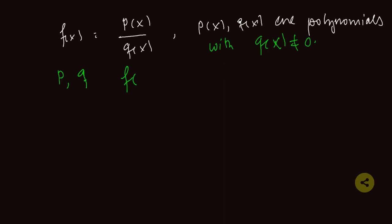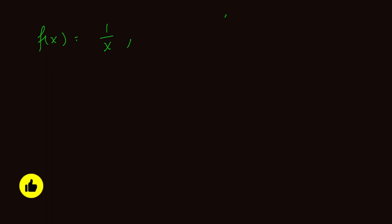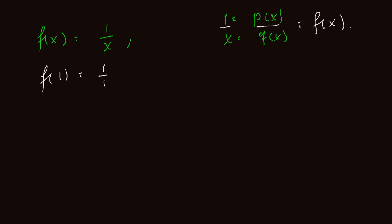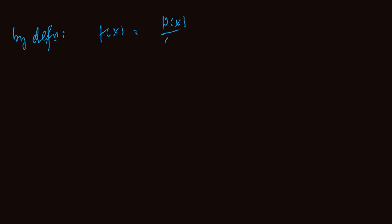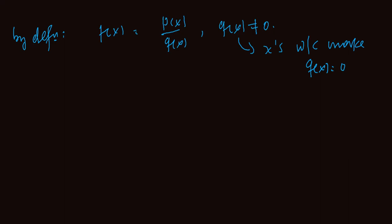For example, the simplest rational function has 1 as the constant function p of x and x as the linear function q of x. In this case, f of 1 is 1 over 1, f of minus 1 is 1 over minus 1. But if we do f of 0, we get 1 over 0. So any rational function of the form p of x divided by q of x should be restricted for q of x not to be 0. This means we need to find those x's which make q of x equal to 0 and exclude these x's from the domain.